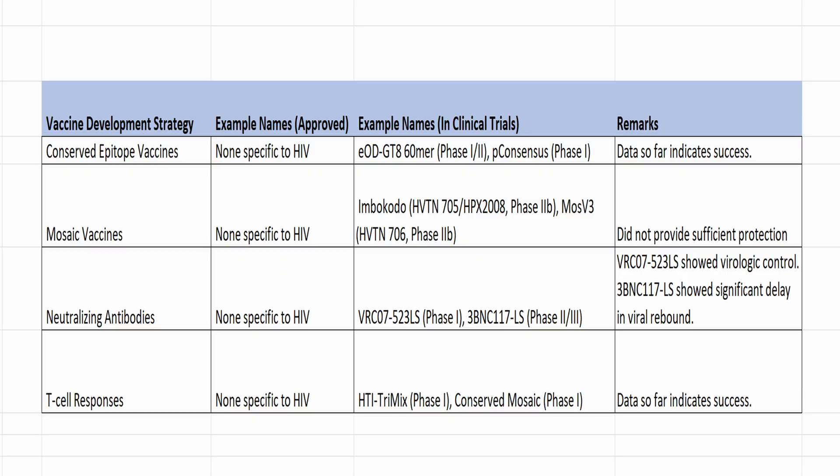There are four types of vaccine development strategy at play: conserved epitope vaccines, mosaic vaccines, broadly neutralizing antibodies, and T cell responses. Looking at the data, there are no approved vaccines so far across any of these strategies. However, there are a lot of promising clinical trials taking place. Unfortunately, mosaic vaccines did not provide sufficient protection, but the other three strategies are showing promising results. We have covered EOD-GT8 60MER and broadly neutralizing antibodies, or BNABs, a few times on this channel, and I will cover the T cell response vaccine soon.